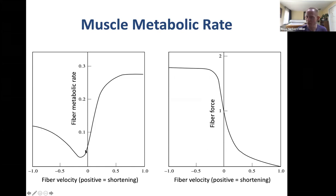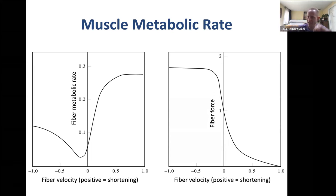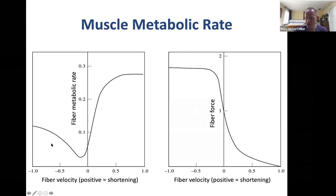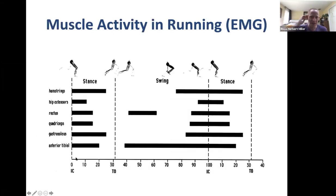At faster eccentric velocities, energy consumption increases but not nearly as sharply as on the concentric side. Combined with the force-velocity curve showing that eccentric contractions can produce more force than your max isometric force, eccentric contractions are generally beneficial for economy in movements like running — high force production for relatively low metabolic energy cost.